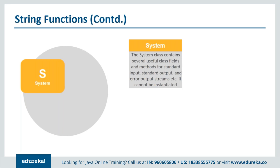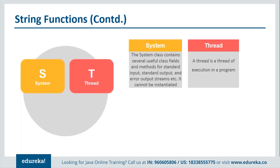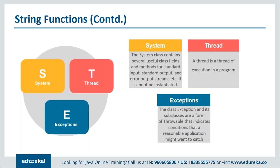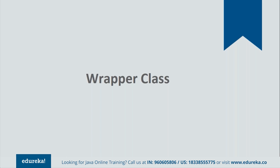The System class helps with various input, output, and error streams — it provides class fields and methods for standard input/output and error output operations. Thread, which we saw in our previous session, represents a lightweight process, and the Thread class is what helps you work with threads. Exceptions are used to handle unforeseen behaviors or code errors that can only be dealt with at runtime. The Exception class is what lets you handle those runtime errors.